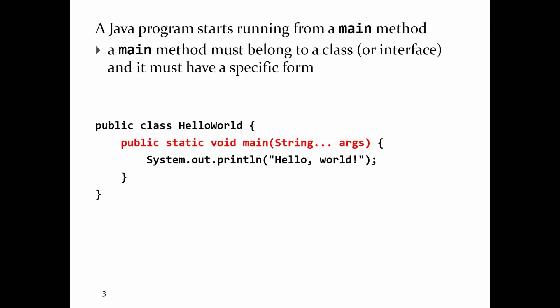In Java, to run a Java program, somewhere there has to be a method called main — which is what this thing in red is. All that stuff in red is one form of the Java main method, and this is where your program will start to run from.